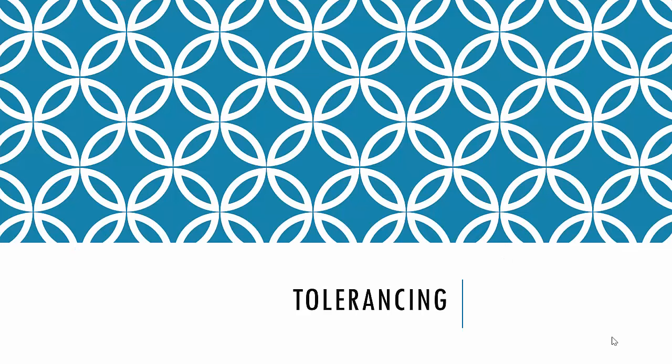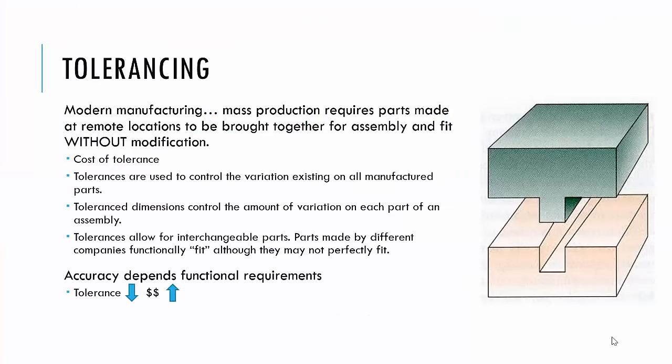Let's talk just a little bit about tolerancing. Modern manufacturing, mass production, requires that parts be made all over the world and then brought together for assembly without there being custom modifications. That's the definition of what we do now. So there's a cost of tolerance. We could make parts perfectly, but that's going to have a ridiculous cost associated with it. Tolerances we use to control the variation existing on all manufactured parts. There'll be some that are in spec, some that are out.